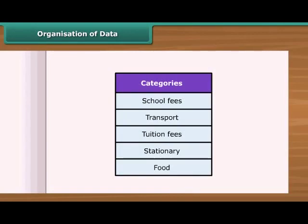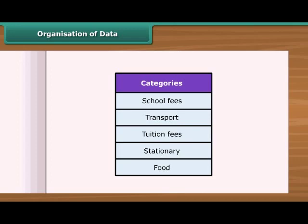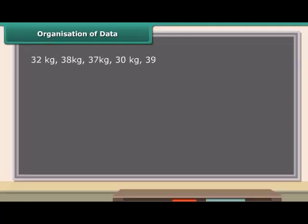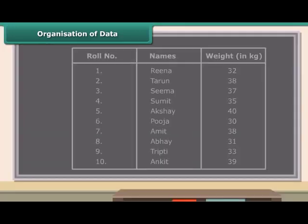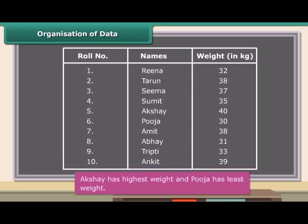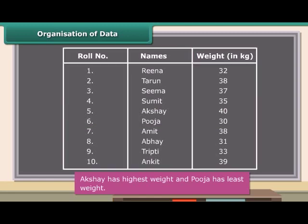We collect data to record and organize it. But why do we need to do that? Look at the following data. A class teacher of class 7 listed the weight of 10 students — is this data easy to understand? Now look at this data. You can easily know which student has the highest weight and which has the least. So when we put data in a proper table, it becomes easy to understand and interpret. We can put many kinds of data in tabular form.